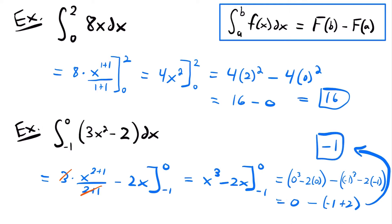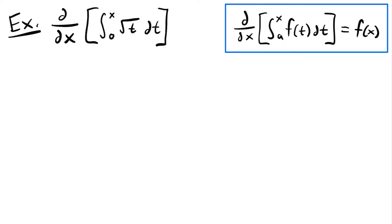Those were two basic examples of evaluating definite integrals using the fundamental theorem of calculus. There is a second part of the fundamental theorem of calculus to look at as well. The second part says that the derivative with respect to x of the integral from the lower bound a to the upper bound x of some function defined with t, dt, will be equal to f of x.